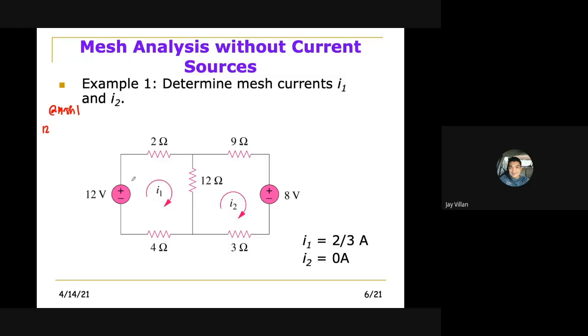And take note that 2-ohm resistor is a voltage drop, whereas your 12-volt source is a voltage rise. So this becomes minus 2I1. So minus 2I1, since that is a voltage drop. And in a resistor, it was said earlier in our previous lessons.